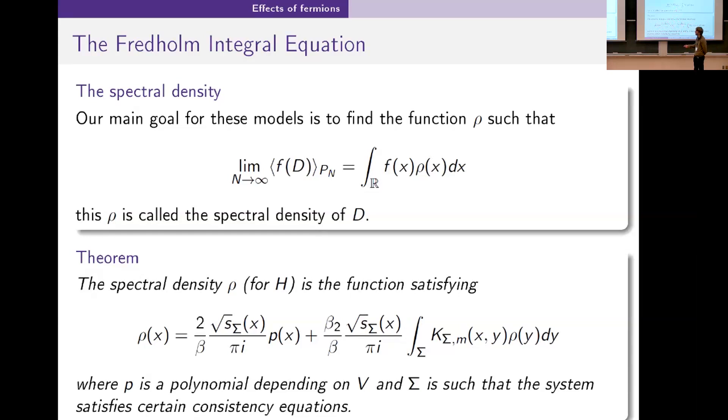A little bit more details about this. This polynomial P is a polynomial that depends on the action you've put in. In our case this is going to be a linear polynomial most of the time. That's because we put in a quartic and there are some reductions in there.